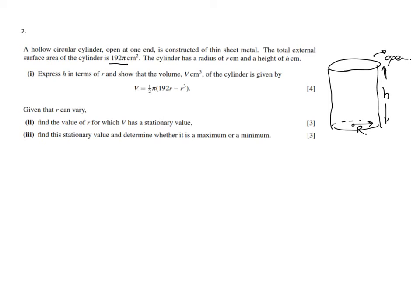Express h in terms of r and show that the volume V of the cylinder is given by that particular equation. This is a 'show that' question, so this is the answer key and we have to show workings leading to that particular answer. Before we look at the volume, there's something we have to do with the surface area.